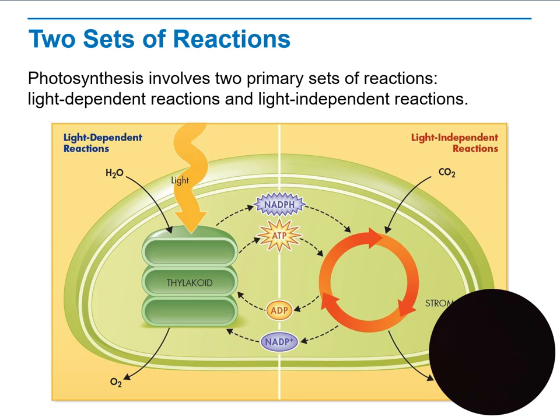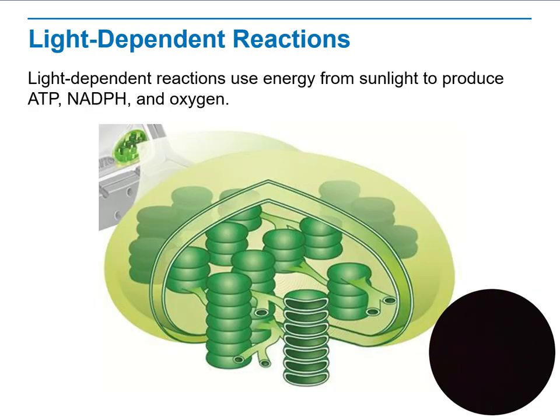The two steps of reactions — the light-dependent and light-independent reactions — will be discussed in detail, including how they convert energy. The light-dependent reaction uses energy from sunlight directly to produce ATP, NADPH, and oxygen. We will explain exactly what NADPH means. The light-dependent reactions occur inside the thylakoid of the chloroplasts, and we will go through them in detail to explain how they perform this work.